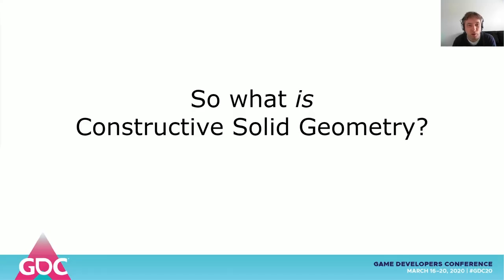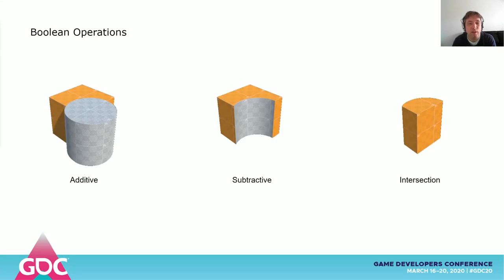First, let's quickly go over what CSG really is. You need to understand the concept of boolean operations. You basically take some shapes called brushes, perform a boolean operation on them, and you end up with a new shape. The most common operations are additive, subtractive, and intersection. You can see here what these operations do.